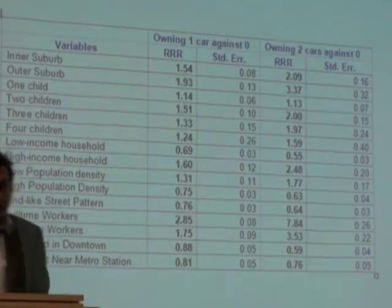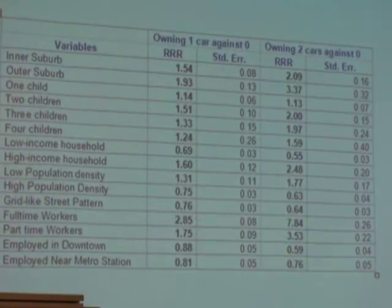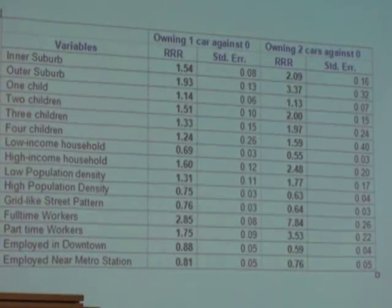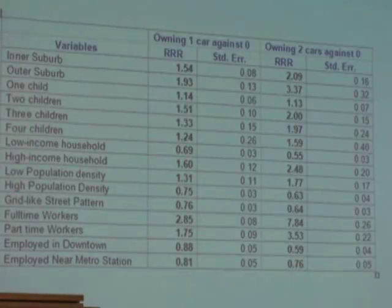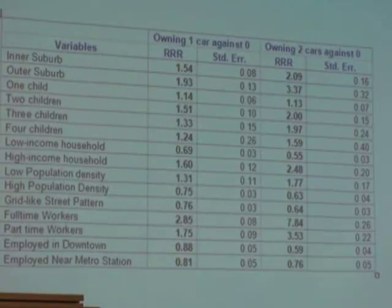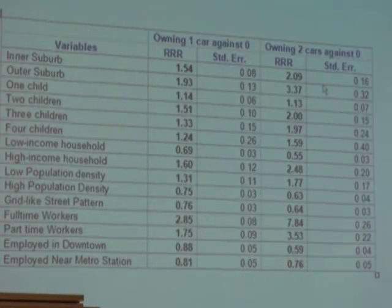Those employed in downtown Montreal, which is very well served by public transit, are 12% less likely to own a car than those employed elsewhere. Those employed near a metro station are 19% less likely to own a car than not owning one. The same interpretation applies to the two-cars-against-zero column.